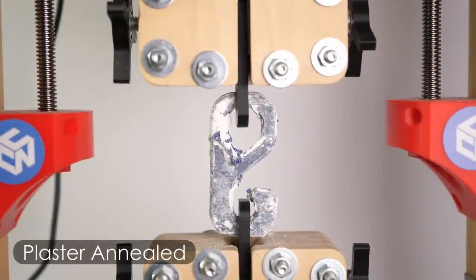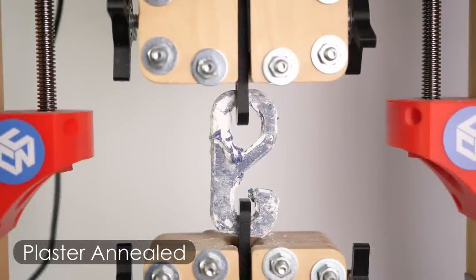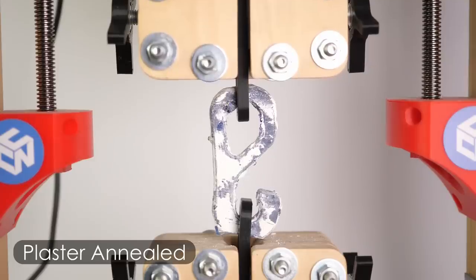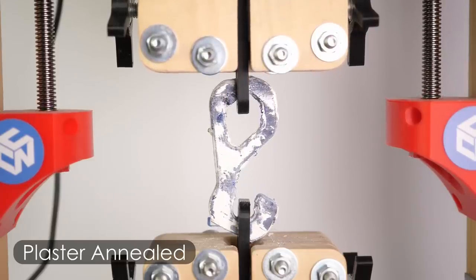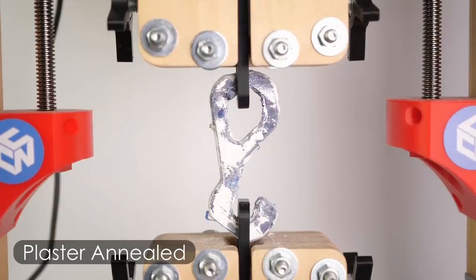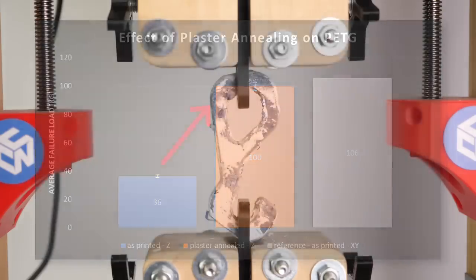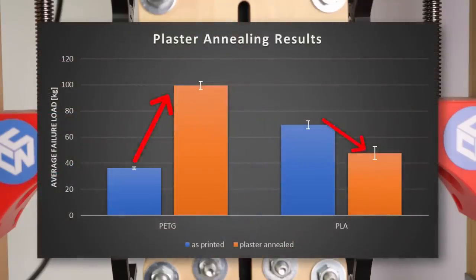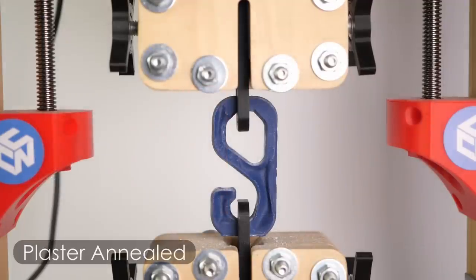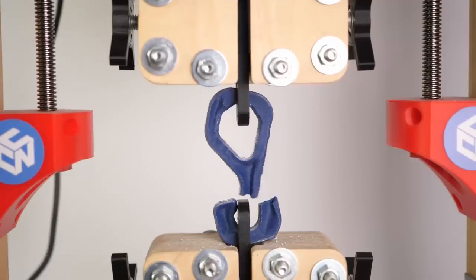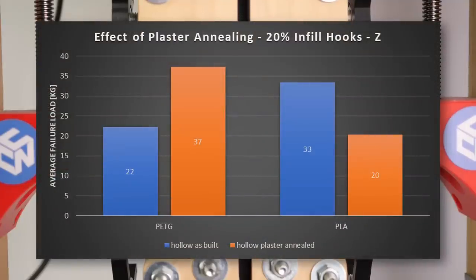But let's get to the PETG and oh boy, those results were more than impressive. The parts didn't snap through the layers but either violently ripped or even yielded. What never happens with those standing hooks. The final average strength was at 100 kg, so only slightly lower than the ideally printed ones and almost three times as strong as before. PLA was disappointing but PETG seems to have worked just as we hoped it would. The hollow hooks showed similar results with the PLA hooks becoming weaker and even the deformed PETG hook doubled its strength.